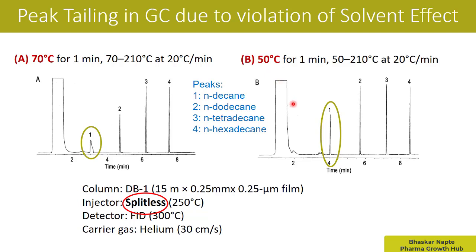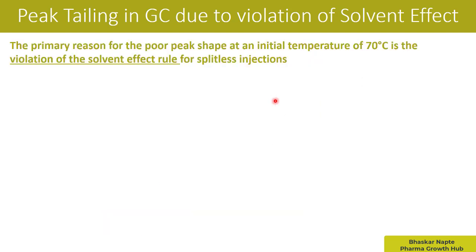The point of discussion is: why did this happen? At 70 degrees Celsius the peak got distorted, whereas at 50 degrees Celsius the peak is very proper, symmetric, and well accepted. The primary reason for the poor peak shape is the violation of the solvent effect at 70 degrees Celsius.